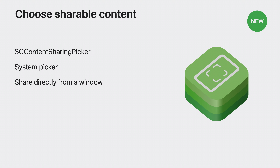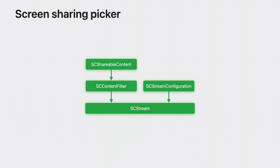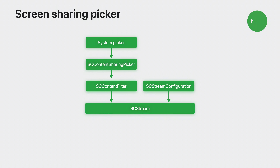It also has a built-in stream request callback that allows your application to know when a new stream is being requested. And finally, it comes with per-stream customization, where you can define how the system experience is applied to each stream. The constructs for getting the filter for an SCStream now go from using SCShareableContent to using the system picker interface with the SCContentSharingPicker singleton to pass back SCContentFilter.